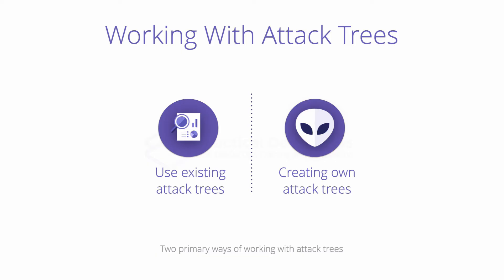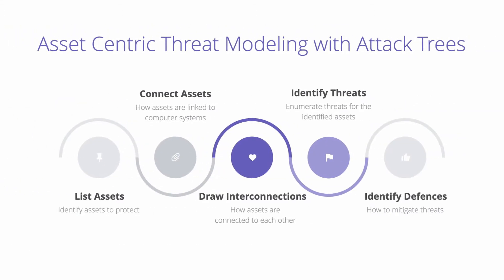No matter which route you take, reviewing existing resources for attack trees is a great way to either find threats in your applications or come up with your own attack trees. Once we have an architecture diagram connecting the assets we want to protect, we can start using attack trees. The process is straightforward: we iterate over each leaf node on the attack tree and identify whether that attack or threat action applies to the asset we're trying to protect.